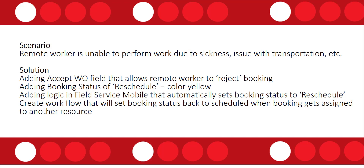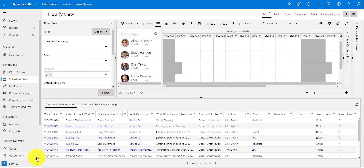Today's scenario is when a remote worker is unable to perform work. We have a booking assigned to a remote worker but they can't perform it — maybe they're sick or their car has broken down. They could call the dispatcher, but this is a quicker way. We'll add a two-option 'Accept Work Order' field, a 'Reschedule' booking status in yellow, logic in the mobile app to auto-set the status, and a workflow to revert it when rescheduled.